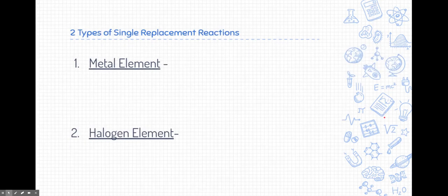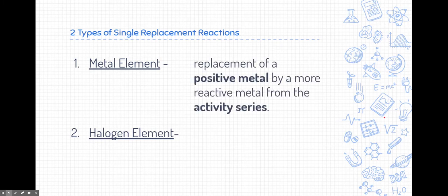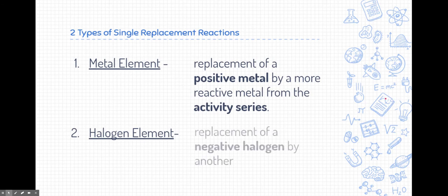There are two types of single replacement reactions. One type involves a metal element — that's a replacement of a positive metal by a more reactive metal from the activity series, which we'll discuss shortly. The other type is where the single element is a halogen, which is a non-metal — it's a replacement of a negative halogen by another halogen.